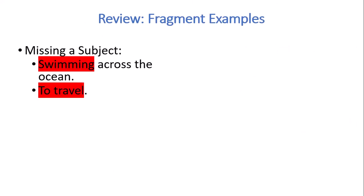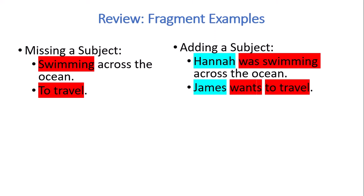So some examples here are some missing a subject. Swimming across the ocean and to travel. Both of those have the verb highlighted in red but we don't have a noun doing the action. So what's swimming across the ocean? Who is traveling? So we add our subject to fix those fragments. Hannah was swimming across the ocean. James wants to travel. Our subjects are there in blue.